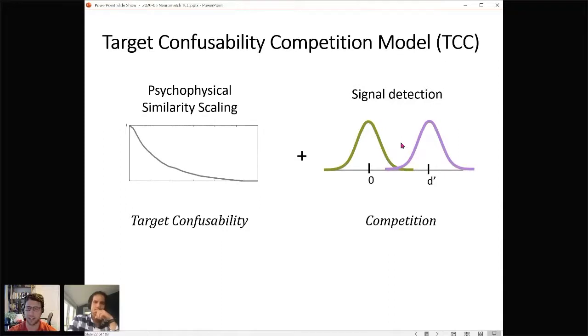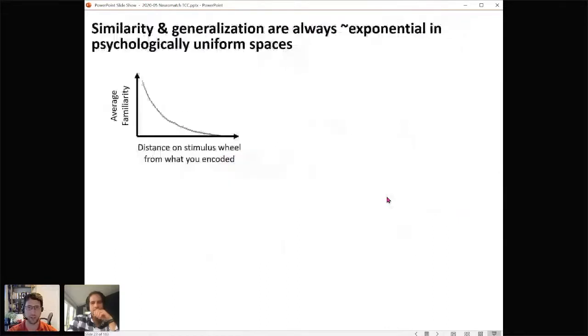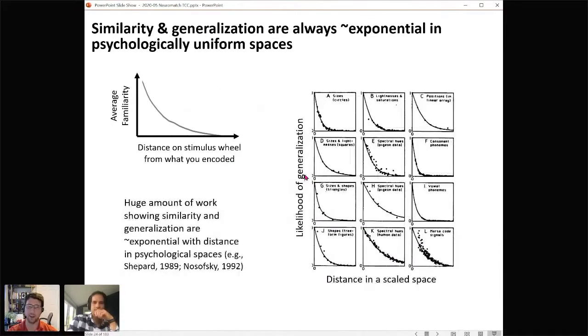The idea is just this similarity scaling just combined with noise, just signal detection, seems to explain memory errors. The question is really where does this similarity scaling come from. These sort of look similar in some way, they're different shapes to some extent but they look similar, and they're always roughly exponential. This is exactly what we should have expected, because there's a huge amount of work showing both similarity and generalization are approximately exponential with distance in psychologically uniform spaces like this lab color space, for example the universal law of generalization or the GCM model.